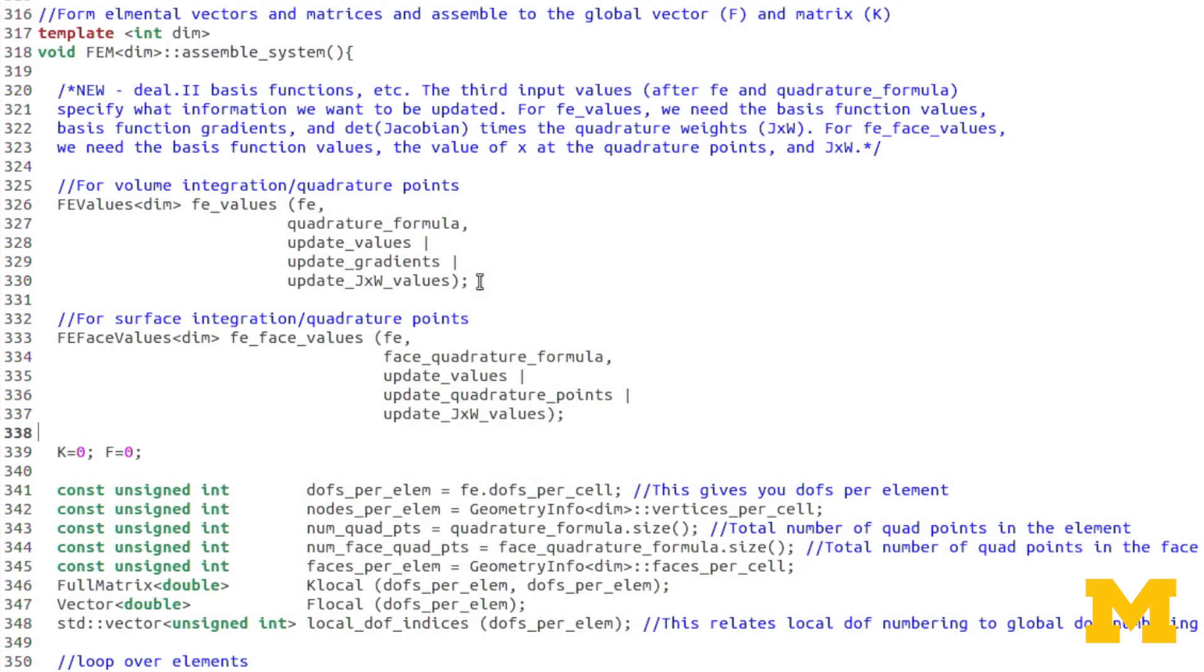For FE values, which is what we use for volume integrals, we're going to be updating the values, which are the values of the basis functions. Update gradients, that's again the basis function gradients. And then this JXW, that's supposed to be like J times W. J stands for the determinant of the Jacobian and W stands for the quadrature weights. So it's all three quadrature weights multiplied together in 3D. So it takes care of all of that for us.